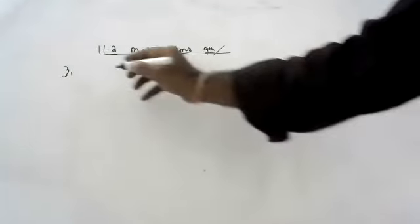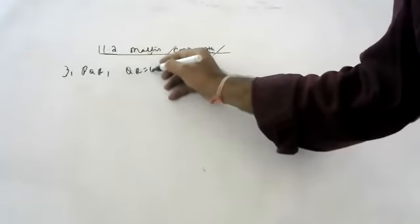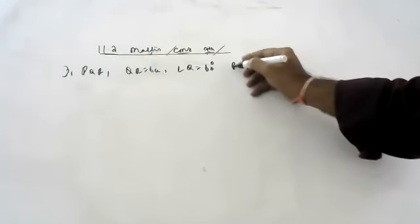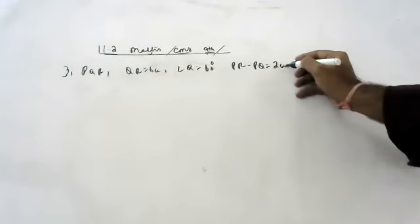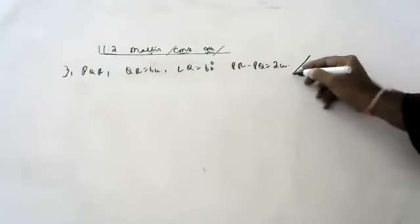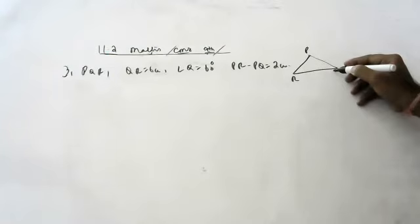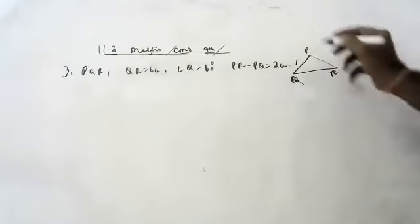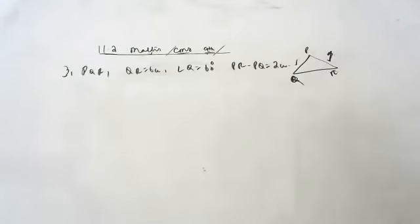Third question: Construct triangle PQR. QR is equal to 6 centimetres, angle Q is equal to 60 degrees, PR minus PQ is equal to 2 centimetres. If PR is bigger, we have to cut it downward. Since PR is bigger, we have to cut it downward.